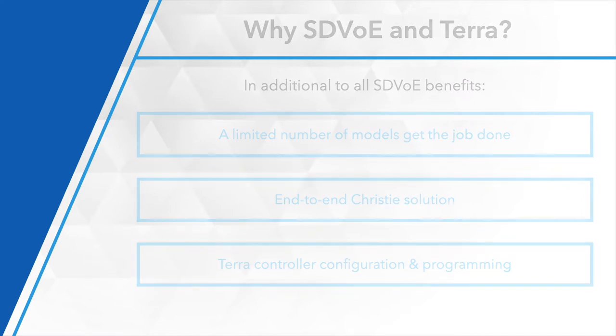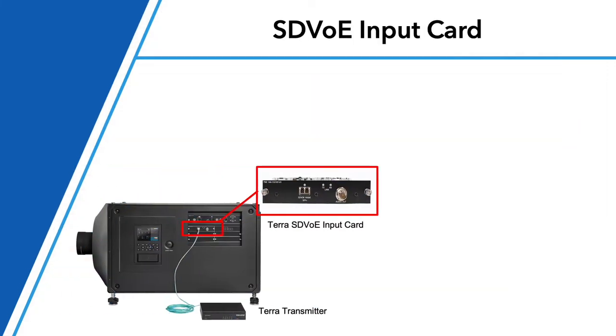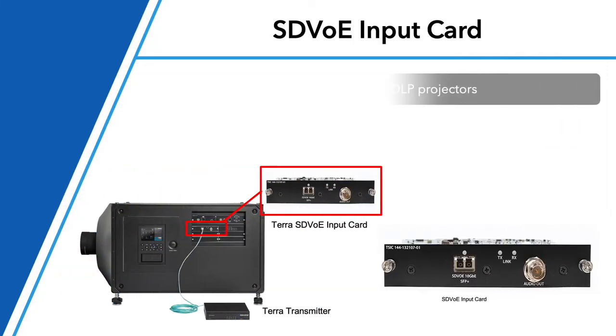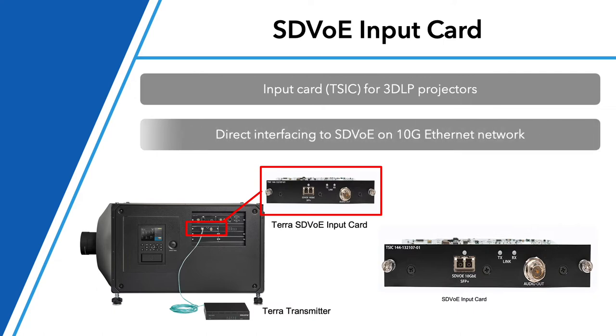We have an SDVoE input card for our projectors. It's an incredible way to insert your video — your fiber or SFP — right into the projector. You don't have to have a separate receiver, it doesn't require more footprint, and you don't need separate power. It's video and communications directly into the projector — a really great feature set.